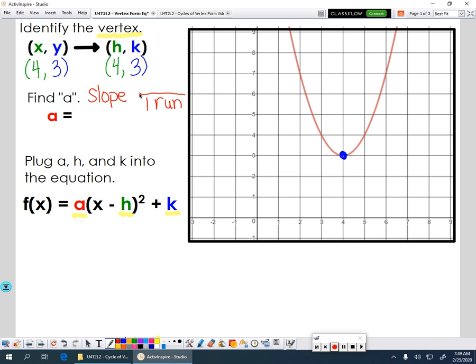So from where your vertex is, you're going to do a run of 1, and then you're going to see how high you rise until you hit your parabola. And in this case, my run and my rise are both 1, which means my a value is 1. And I can tell it's going to be a positive 1 because this parabola opens facing up.